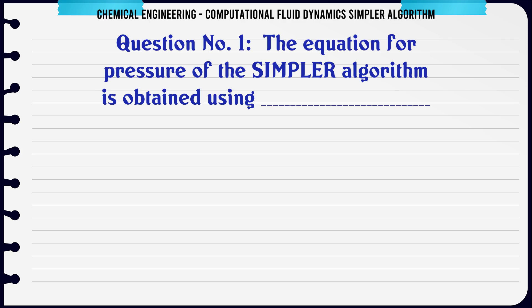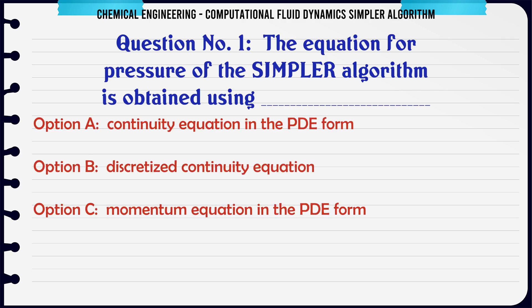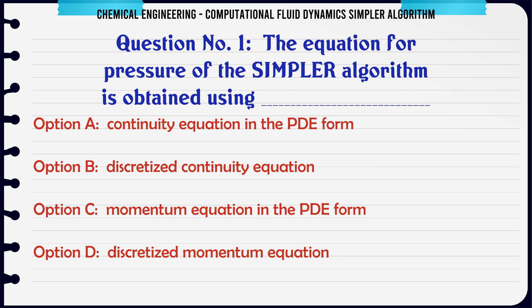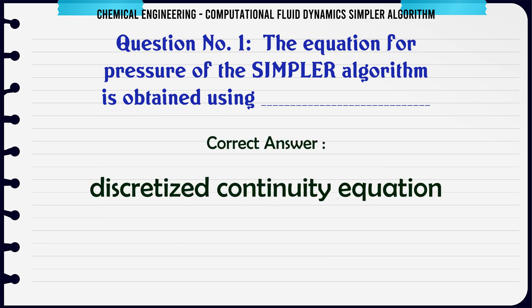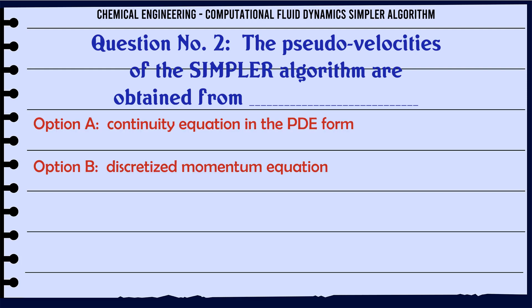The equation for pressure of the SIMPLER algorithm is obtained using: A. Continuity equation in the PDE form, B. Discretized continuity equation, C. Momentum equation in the PDE form, D. Discretized momentum equation. The correct answer is: Discretized continuity equation.